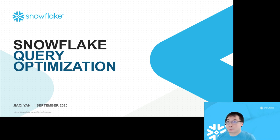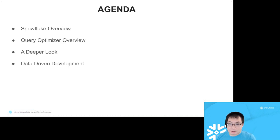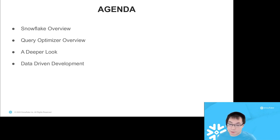Before I get started, I would say a disclaimer. Some of the slides were from a previous presentation I did before where I had talking points. Some other slides I recently made and I don't have talking points, so I might be very smooth in some slides and not as smooth in others. So the agenda: I'll give a brief overview of Snowflake's architecture, then talk about Snowflake's query optimizer, take a deeper look into some particular query optimizations I find interesting, and finally touch upon the philosophy of data-driven development that we follow at Snowflake.